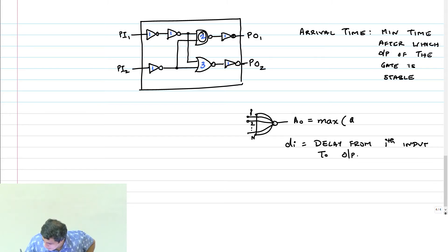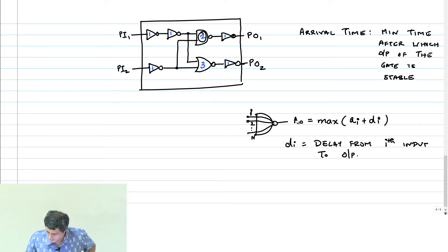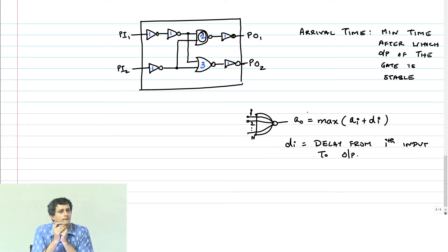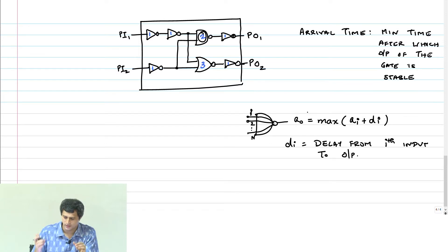The arrival time at the output of this gate will be the maximum over all inputs of: arrival time at the ith input plus the delay from the ith input to the output. So arrival time at the output a_o equals max(a_i + D_i). By definition, arrival time at primary inputs is 0 — they arrive at time 0; it is just a definition.